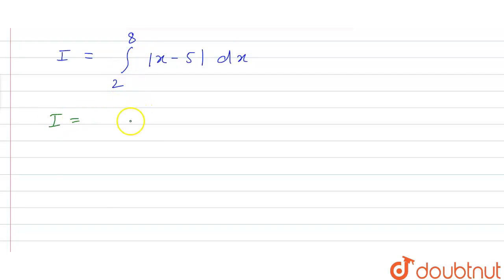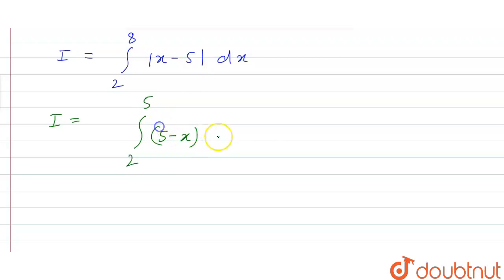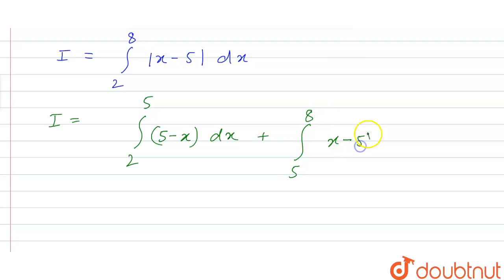We will split this limit into two parts. From 2 to 5, modulus (x minus 5) will be equal to (5 minus x) dx, plus from 5 to 8, the modulus (x minus 5) will be equal to (x minus 5) dx.